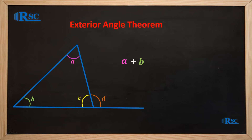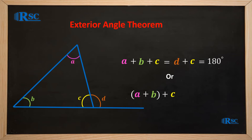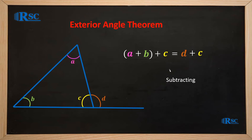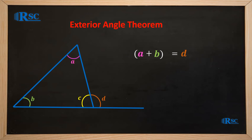Therefore, A plus B plus C is equal to D plus C, which is equal to 180 degrees. Subtracting C from each side of the equation, we now have the sum of A plus B is equal to D.